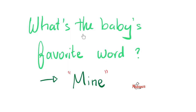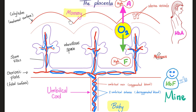If you have ever seen a baby, what's the baby's favorite word? Mine. Such is the story of fetal hemoglobin. Here is mommy's side and here is the baby's side with a single oxygen molecule in between. The baby has hemoglobin F — mommy does not. The baby's hemoglobin F shifts the curve to the left so that oxygen stays on the baby's hemoglobin. And that's how the baby takes oxygen from mommy, because the baby has no functioning lungs while mommy does.